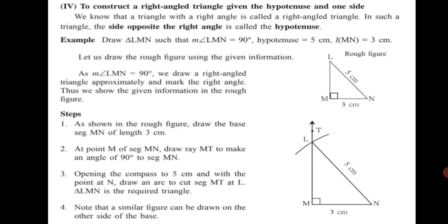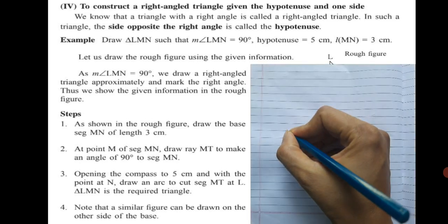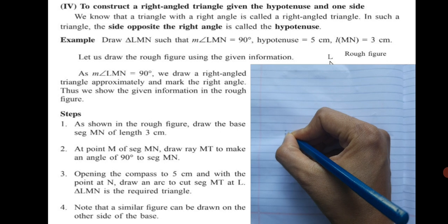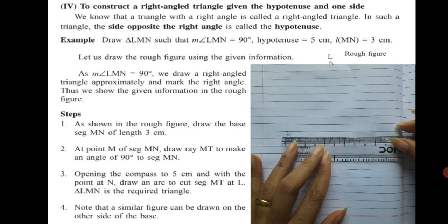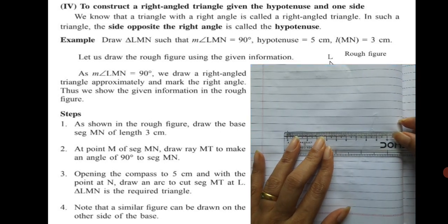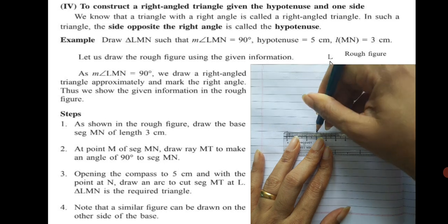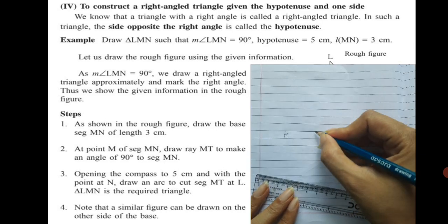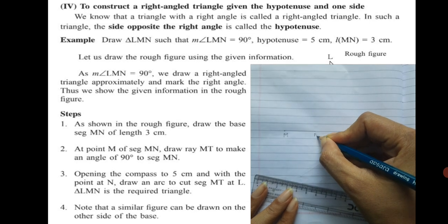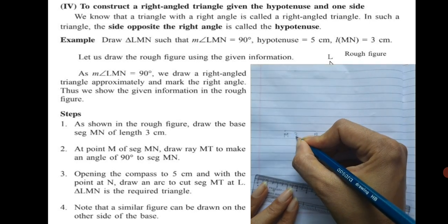Let us start following the steps. First, as shown in the rough figure, draw the base which is segment MN of length 3 cm. Mark a segment MN from 0 to 3 and write the measurement as 3 cm.